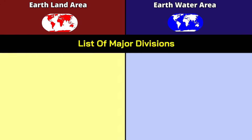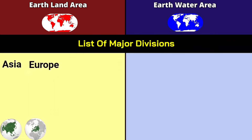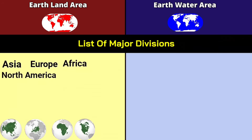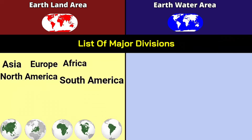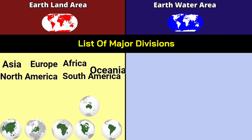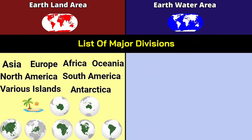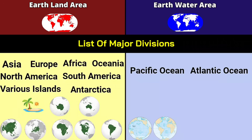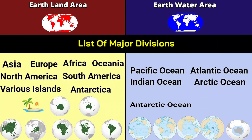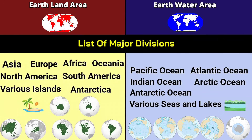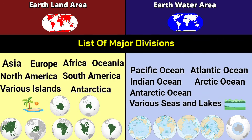List of major subdivisions on land: Asia, Europe, Africa, North America, South America, Oceania, Antarctica, and various islands. Water subdivisions: Pacific Ocean, Atlantic Ocean, Indian Ocean, Arctic Ocean, Antarctic Ocean, and various seas and lakes.